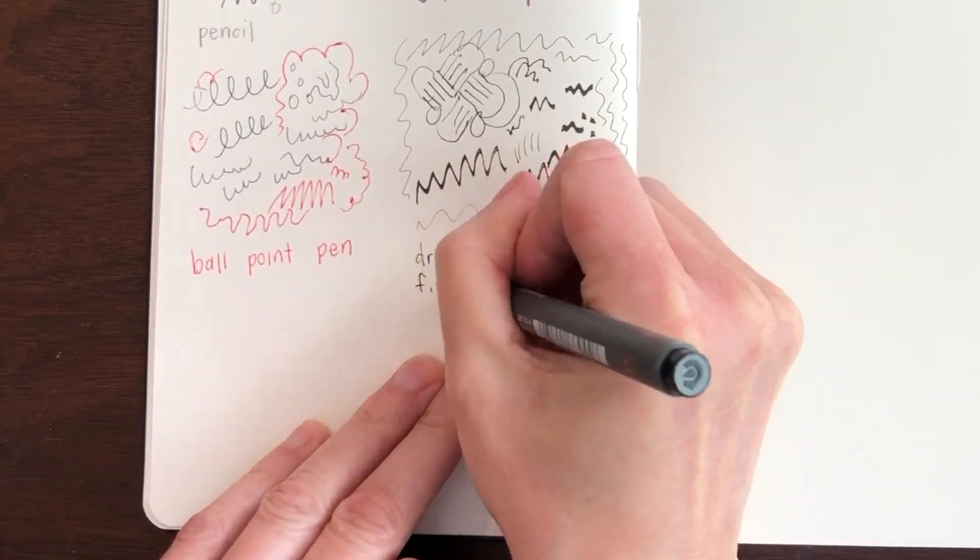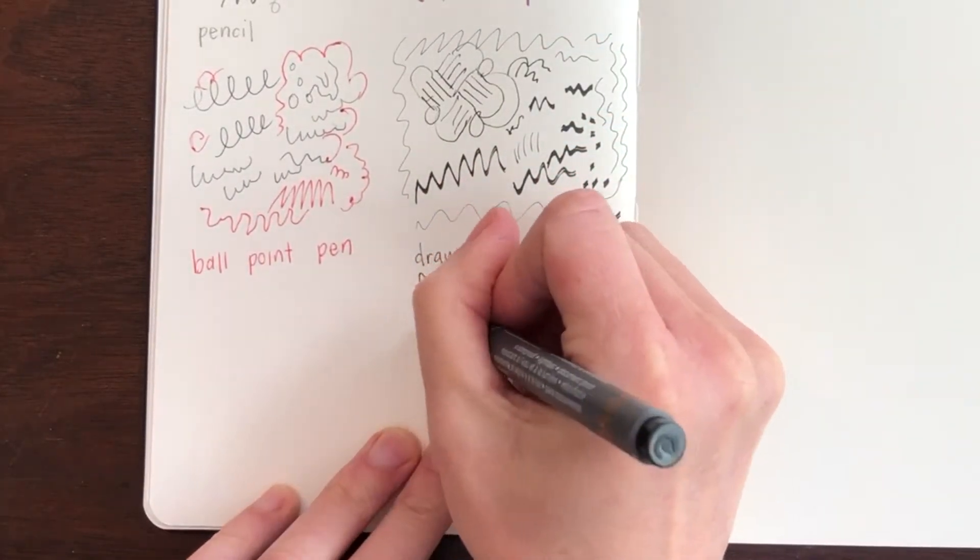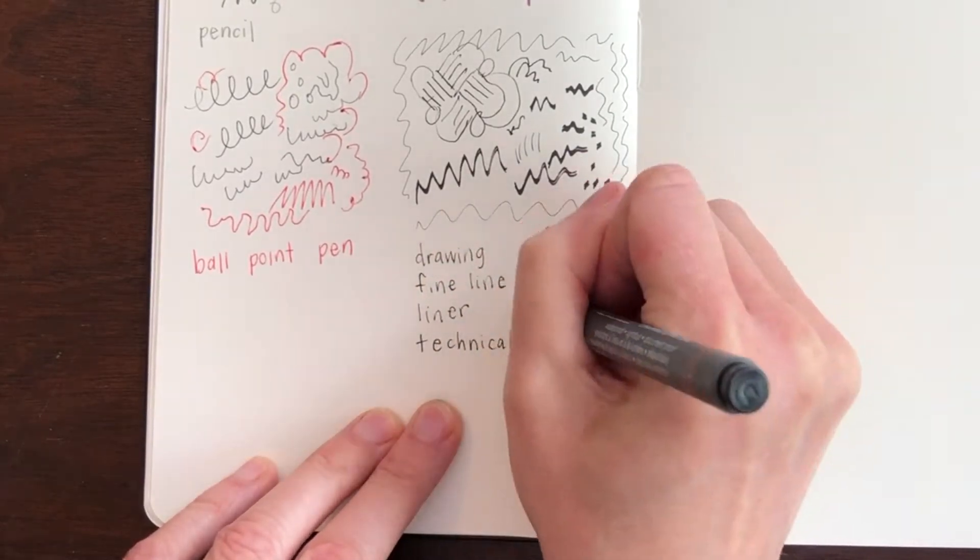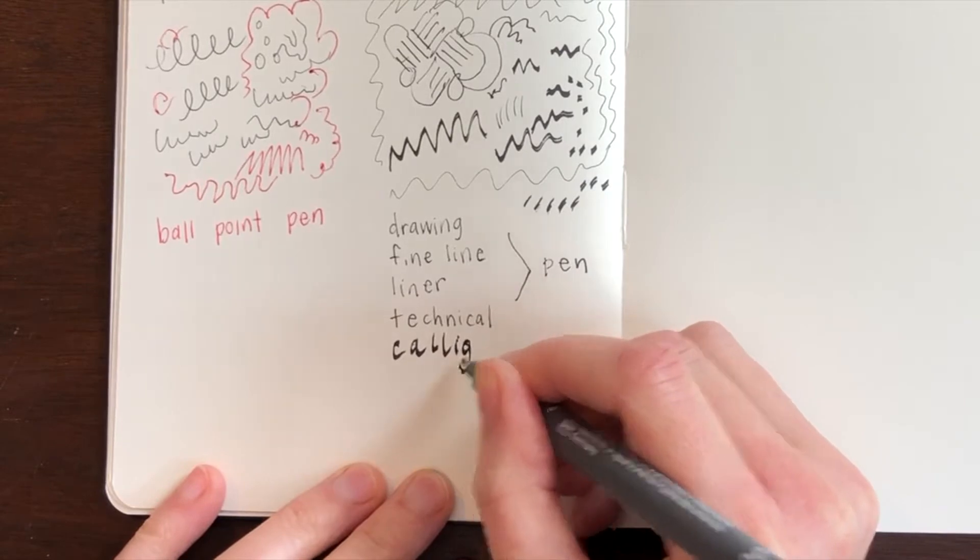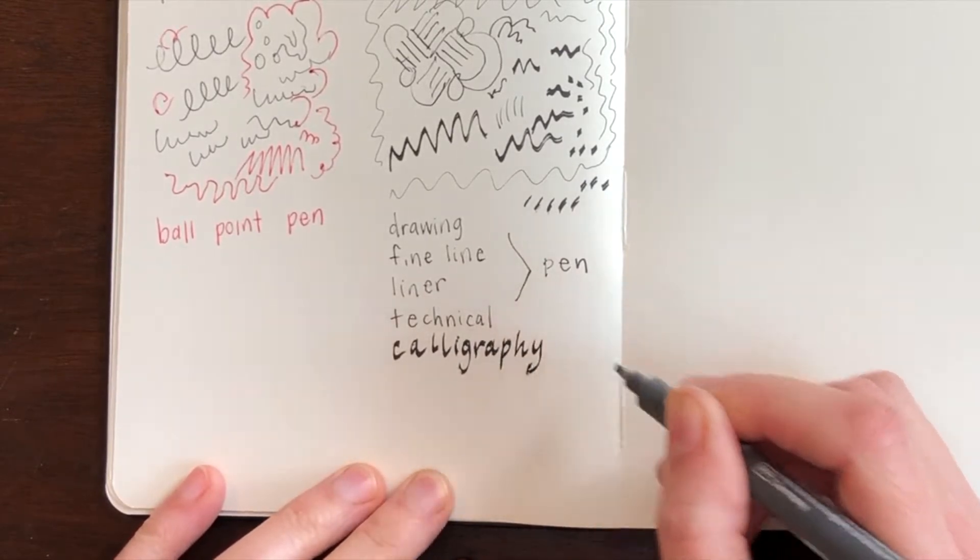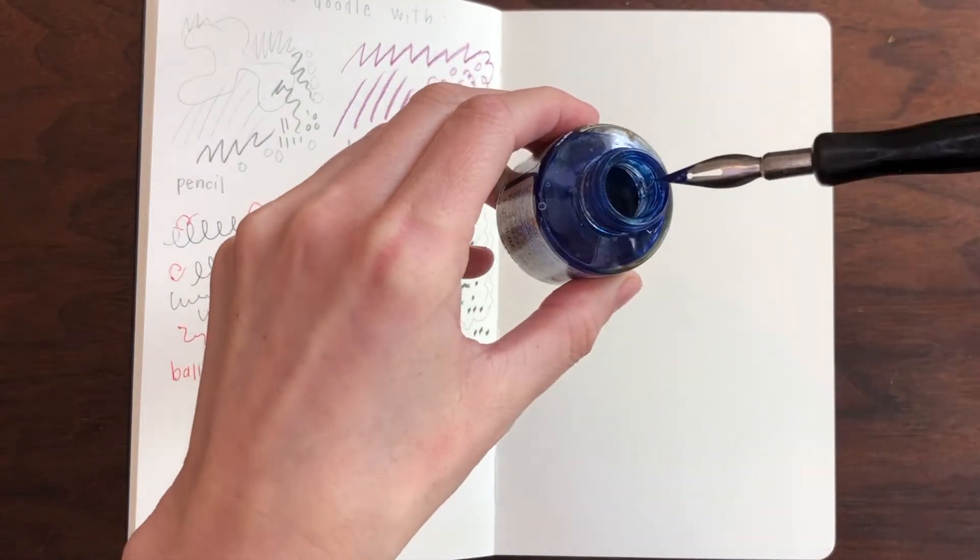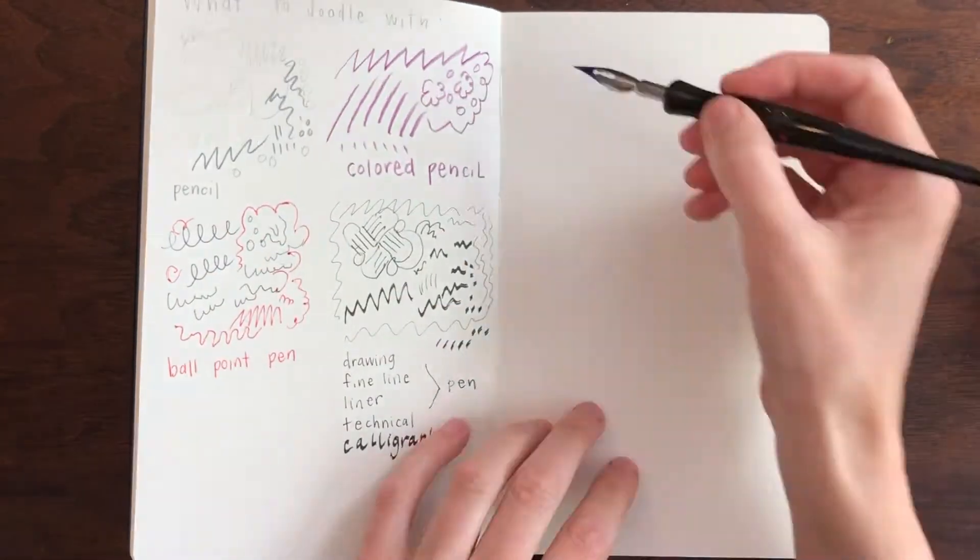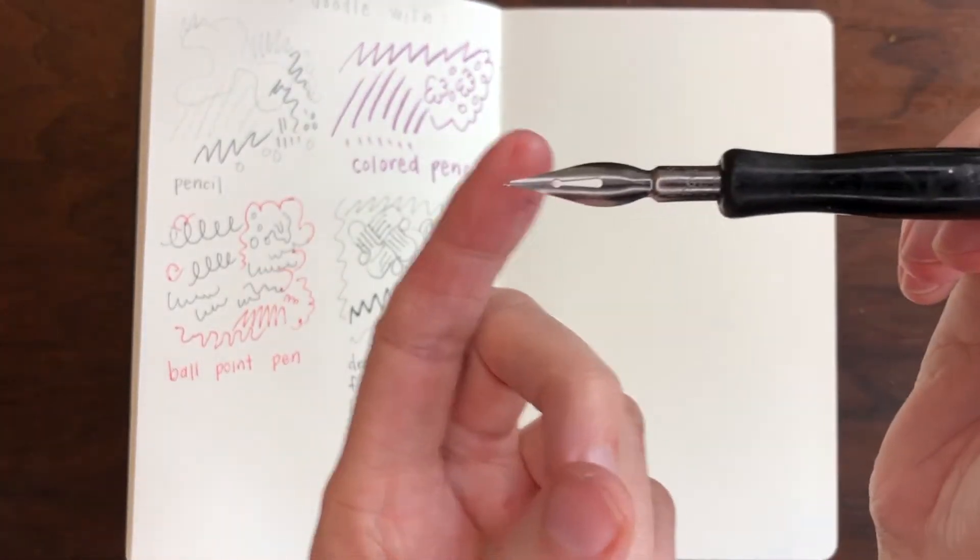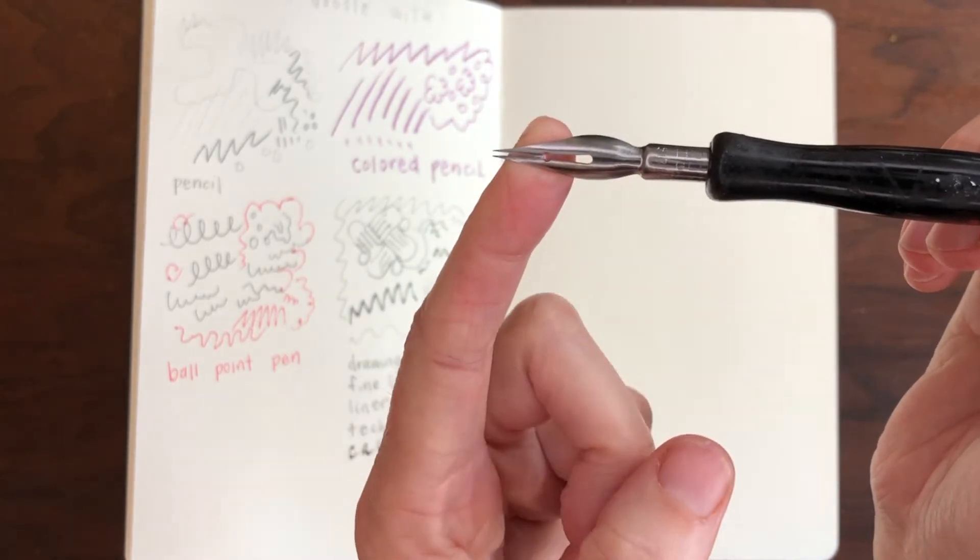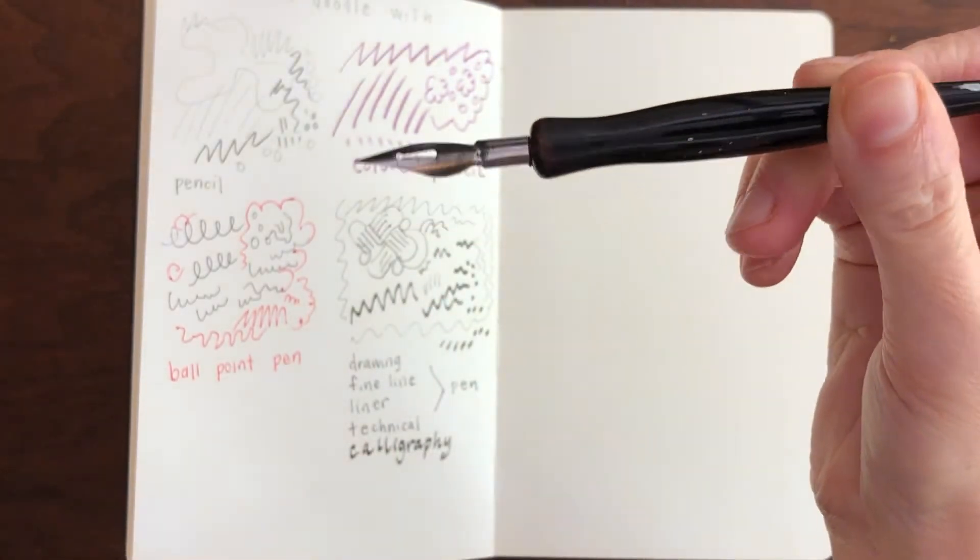They're called drawing pens, fine line pens, liner pens, or technical pens. So they have a lot of different names. The calligraphy pen has a flat edge. Next I'm going to show you some dip pens. These are called dip pens because you dip them in ink or liquid watercolor. This is the nib of the pen and it's a piece of metal that has a little split in the middle and that's what holds the ink.